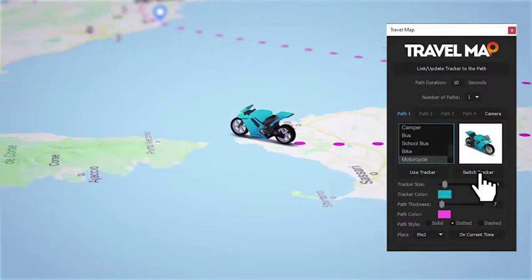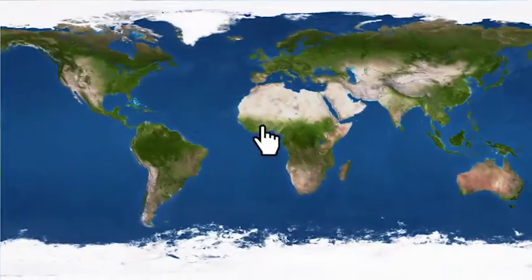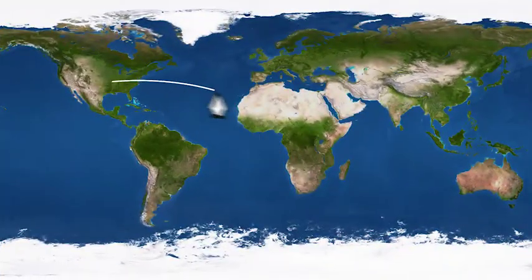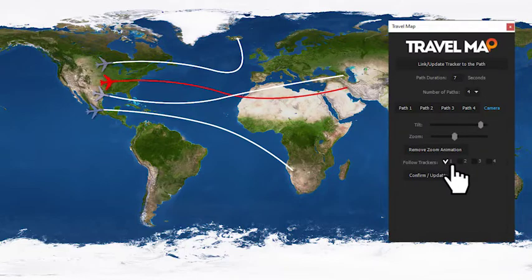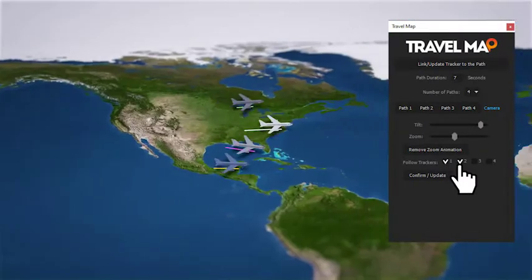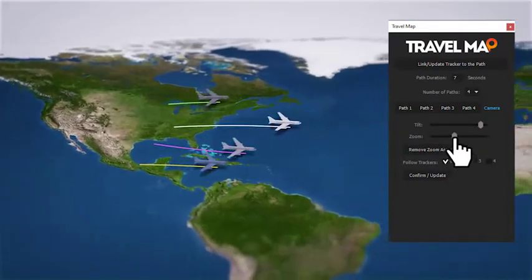Travel Map is very easy to customize. Just draw your paths and set their duration. Choose which trackers you want to follow and the script will create the camera animation.